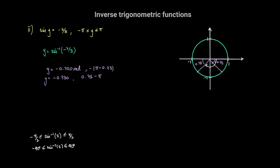Now let's look at from 0 to pi radians. From 0 to pi radians, going in the counterclockwise direction, the sine of any angle here would be positive. So we know that these are the only two values of y between negative pi and pi radians for which the sine of y is equal to negative 2 over 3.